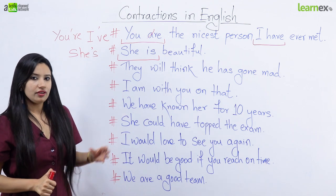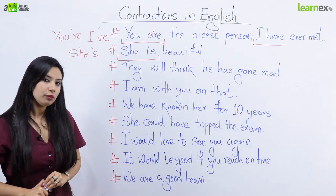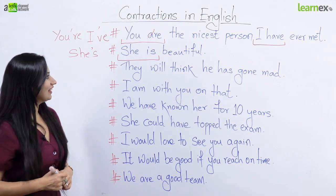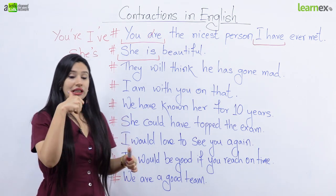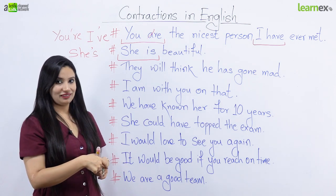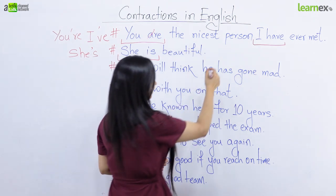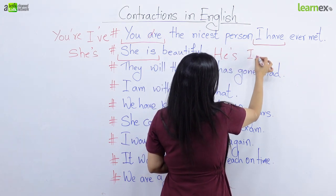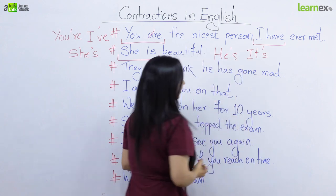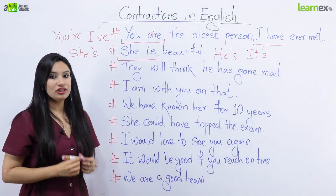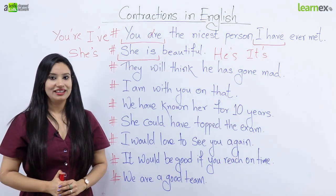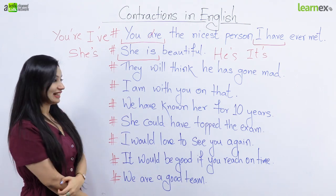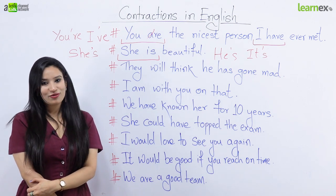Ab zaraa yeh sochiye, kya hum subject change karke aur bhi contractions bana sakte hain iske saath? Aap kaafi smart hain. Isko hum She ke siwa He aur It ke saath bhi istemal kar sakte hain, right. Toh hum keh sakte hain: He's handsome. It's beautiful. Toh He, She, It ke saath hum iska istemal karte hain. Isliye hum inke saath teen contractions bana sakte hain: He's, She's, It's.